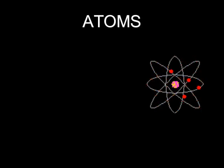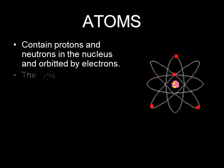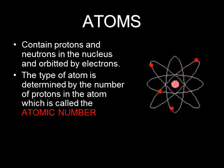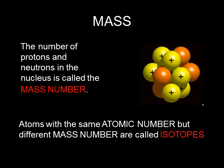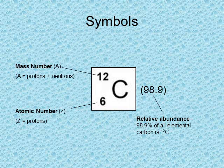The nucleus contains protons and neutrons. The number of protons determines the type of atom and is called the atomic number — for example, carbon always has six protons and calcium always has twenty. In a neutral atom, the atomic number also equals the number of electrons. Most of the mass comes from protons and neutrons, and their total is the mass number. Atoms of the same element can have different numbers of neutrons; these are called isotopes and are represented using a nuclide symbol, where the bottom number is the atomic number and the top number is the mass number. The number of neutrons is found by subtracting the atomic number from the mass number.